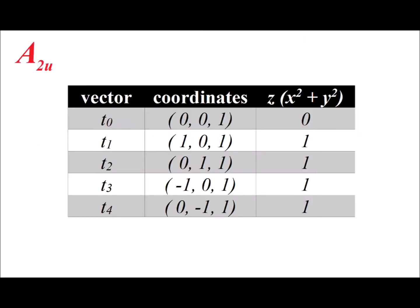In the Kim method, to find the coefficients of each vector t0 through t5, we take the x, y, z coordinates for that individual vector, and we plug them into a basis function. The basis function for symmetry A2U is z times x squared plus y squared. So if we compute the value of that basis function using the coordinates of each of the vectors, we get that for t0, the basis function is equal to 0, and for t1 through t4, their coefficients are each going to be simply 1.